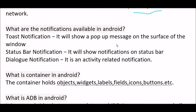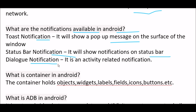Next question: what types of notifications are available in Android? The first type is a toast notification, which shows a pop-up message on the surface of the window. The second type is a status bar notification, which shows a notification on the status bar. The third type is a dialog notification, which is an activity-related notification.